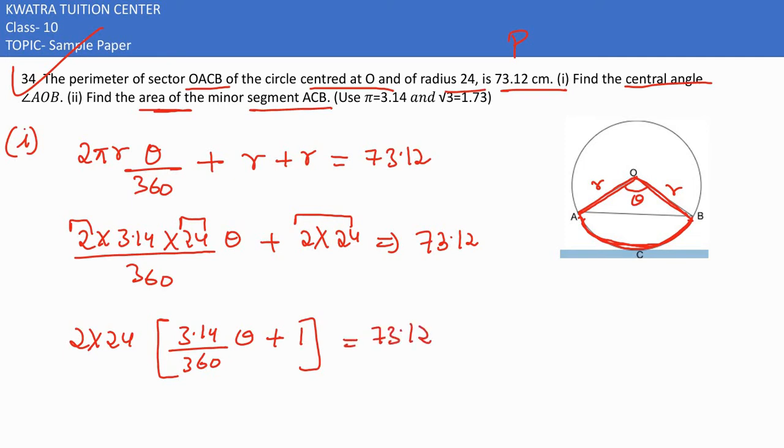How do we solve this? 48 goes to division. So 3.14 divided by 360 into theta plus 1, and on the right hand side you have 73.12 divided by 48. Now we have to divide here.